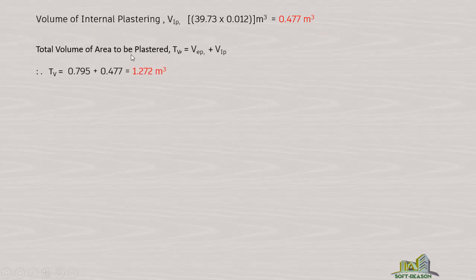The total volume to be plastered equals the volume of external plaster plus the volume of internal plaster. Adding them together: 0.795 plus 0.477 gives us a total volume of 1.272 cubic meters.